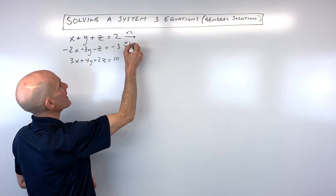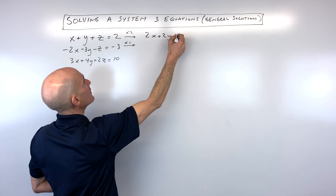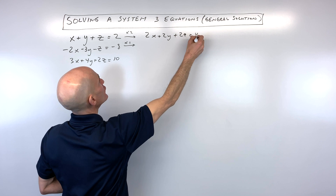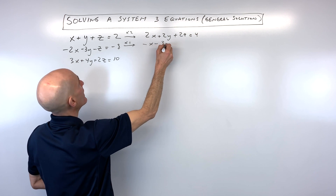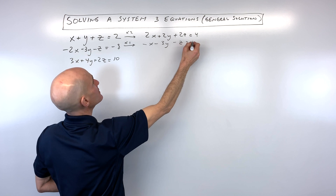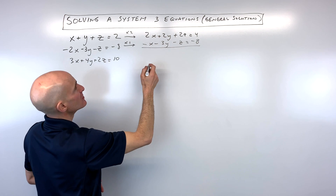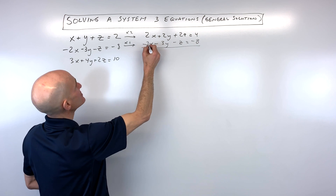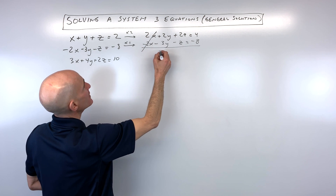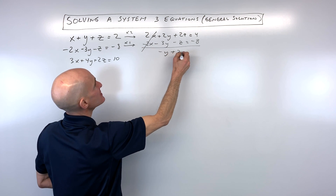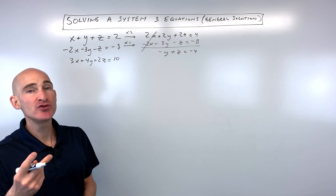So we get 2x plus 2y plus 2z equals four, and then the second one is negative 2x minus 3y minus z equals negative eight. If we add straight down, these x's are going to cancel and we get negative y plus z equals negative four. So we've used the first two equations.